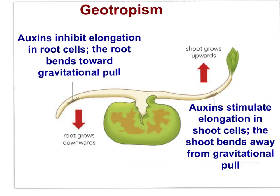Interestingly, auxins appear to inhibit cell elongation in root tissue, resulting in cells that elongate on the upper side of the root, causing the root to bend in the direction of gravitational pull. Remember that auxin efflux pumps establish concentration gradients of auxin in plant tissue, and that auxin influences cell growth rates by changing the pattern of gene expression.